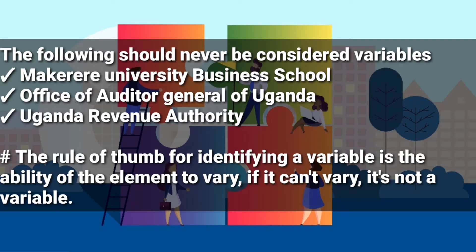These should not be considered variables. The rule of thumb for identifying a variable is the ability of the element to vary — if it cannot vary, it is not a variable. The opposite of a variable is a constant. MUBS, the Office of the Auditor General of Uganda, and Uganda Revenue Authority are constants; they do not vary.